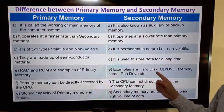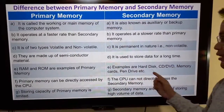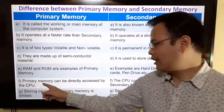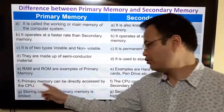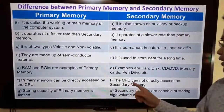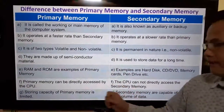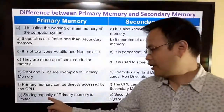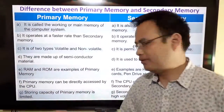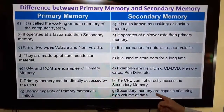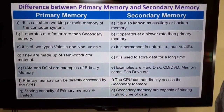Examples of secondary memory include hard disk, CD, DVD, memory card, pen drive, etc. Primary memory can be directly accessed by the CPU, whereas the CPU cannot directly access secondary memory. The storing capacity of primary memory is limited, whereas secondary memory is capable of storing a high volume of data.